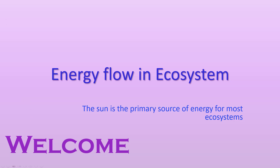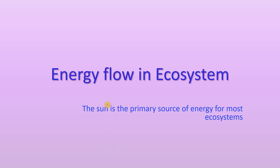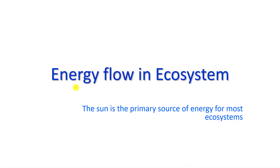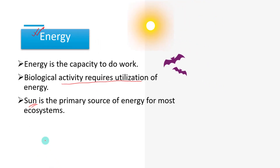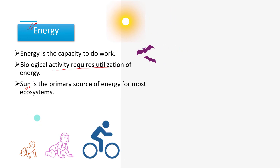Greetings. In the previous video we discussed about trophic level. Today we will learn the energy flow in ecosystem. Energy is the capacity to do work. Biological activity requires utilization of energy which ultimately comes from the Sun. Let us see how the Sun is the ultimate source of energy.